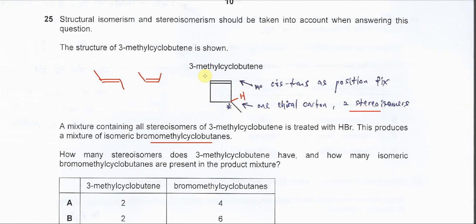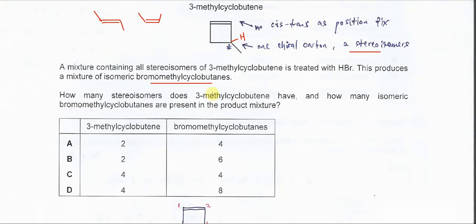Therefore, 3-methylcyclobutene has two stereoisomers. So it's just A or B. Now let's figure out the products, bromomethylcyclobutene.